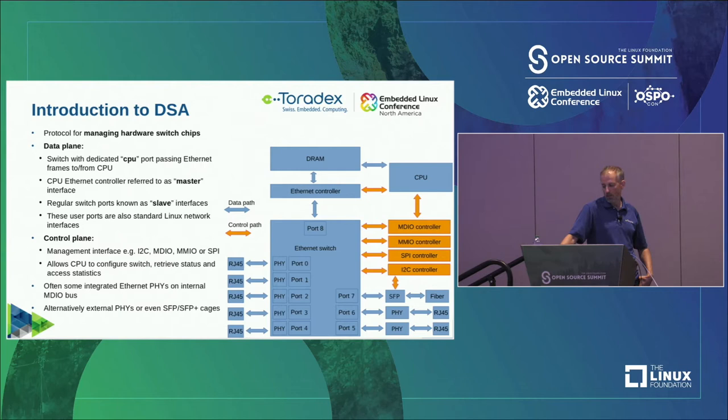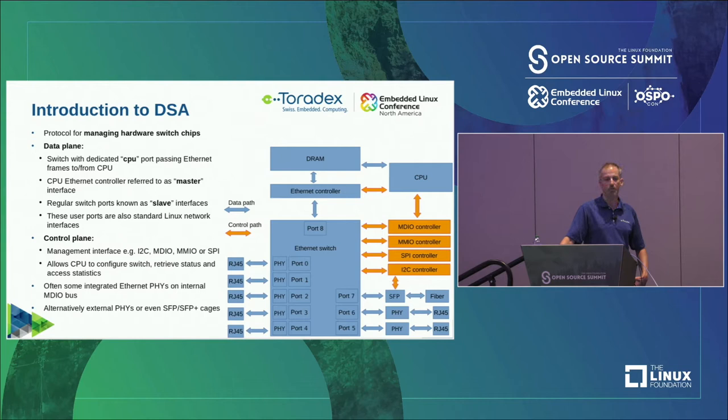Various control path options — SPI, I2C, and others — are all possible. That basically allows the CPU to actually configure the switch, accessing registers just like it does with files, but in this case more registers also allow you to configure the switch fabric.